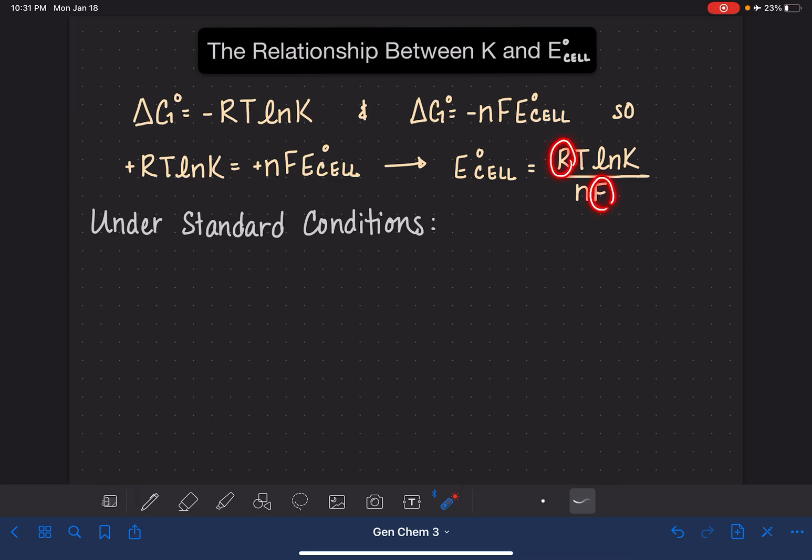and we have a couple of constants in this equation as well, we can actually take the value of R, we can take the constant temperature because it's under standard conditions, and we can take the value of F. All three of these things are constants, and we can just do the math on all three of them right off the bat just to kind of get it out of the way. And that gives us an equation,